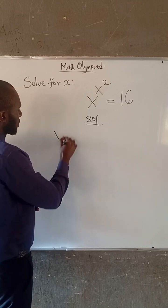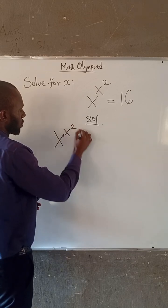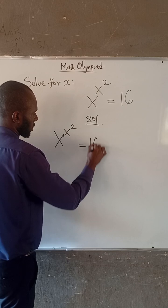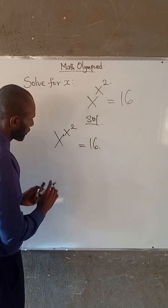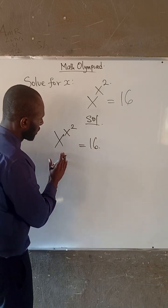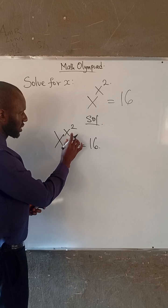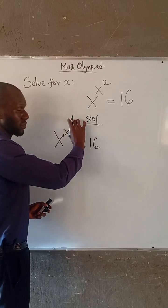We have that x to the power of x to the power of 2 is equal to 16. Now, if you look at the left-hand side, we have x and we have x and we have an index of 2.